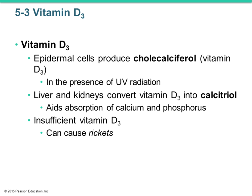The skin also helps with vitamin D production. The skin can manufacture vitamin D — also known as cholecalciferol — for our body, and vitamin D is not easily found in everyday foods. In the presence of UV radiation from sun exposure, epidermal cells produce this vitamin D. The liver and kidneys then convert it into calcitriol, which aids in the absorption of calcium and phosphorus — important because two-thirds of bone is made up of calcium and phosphorus.